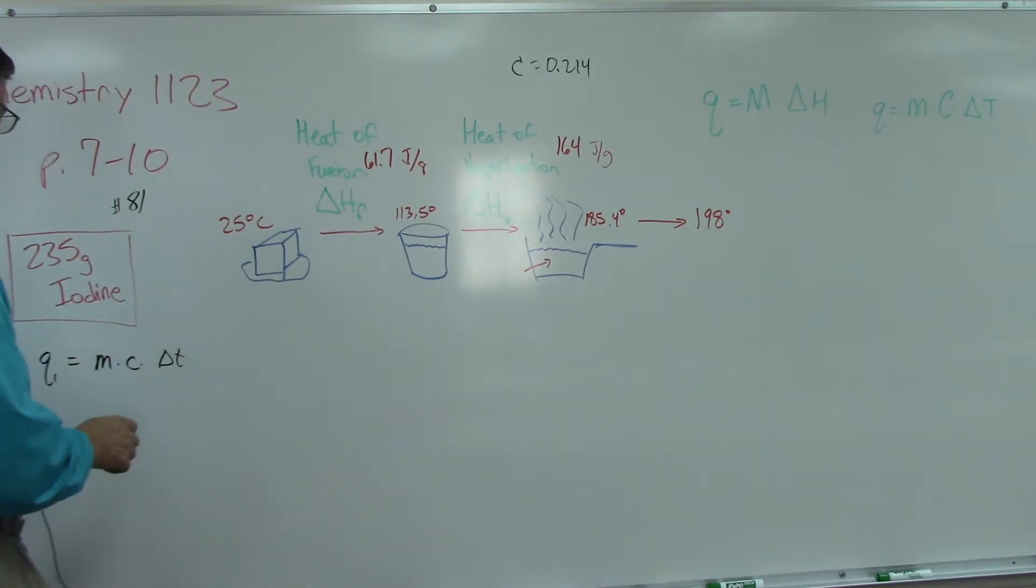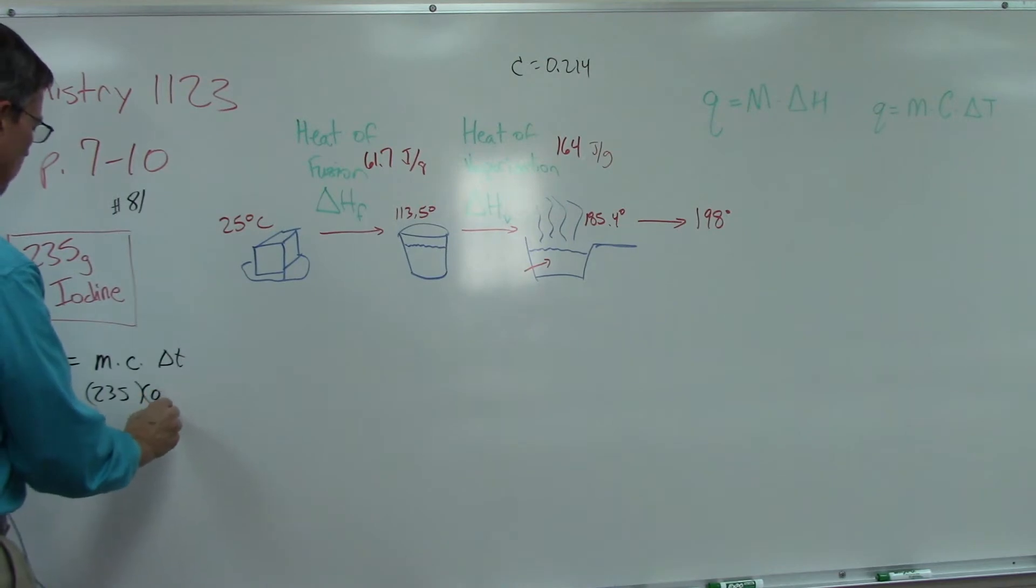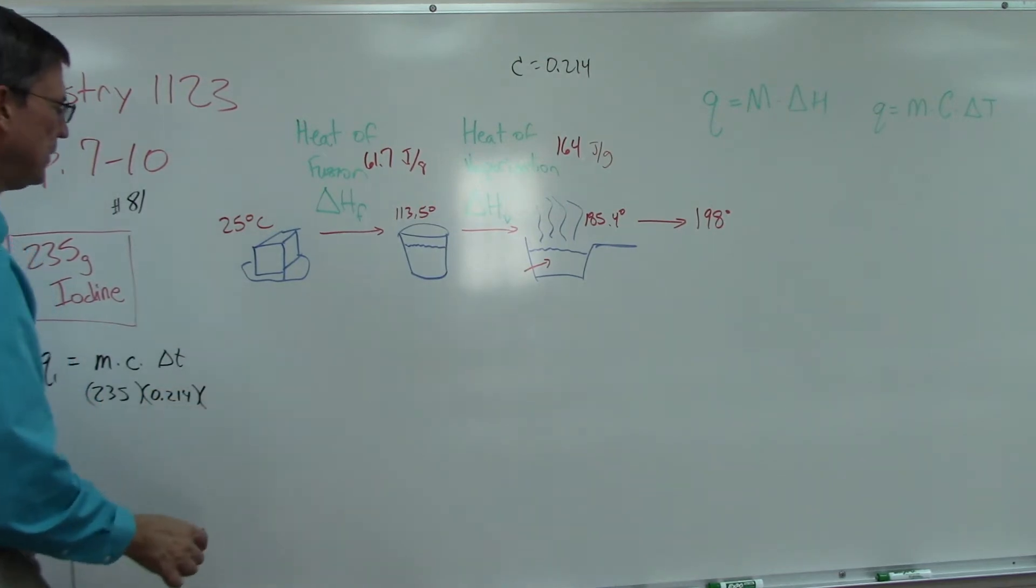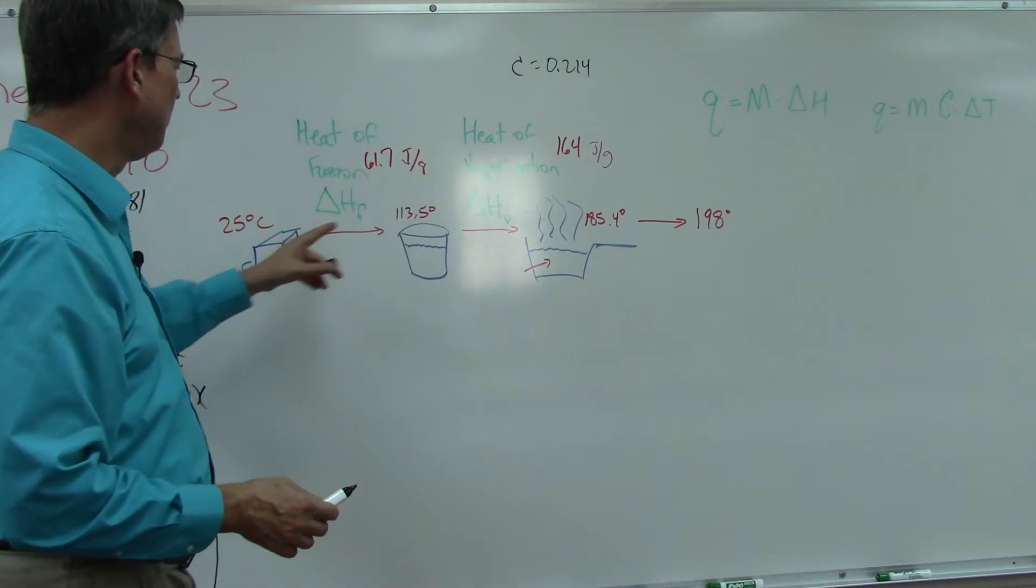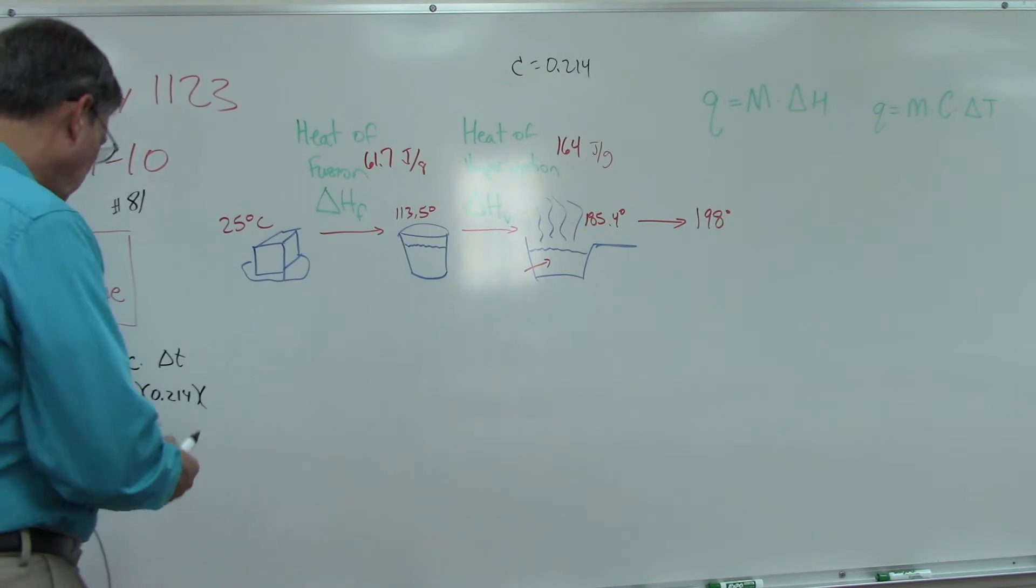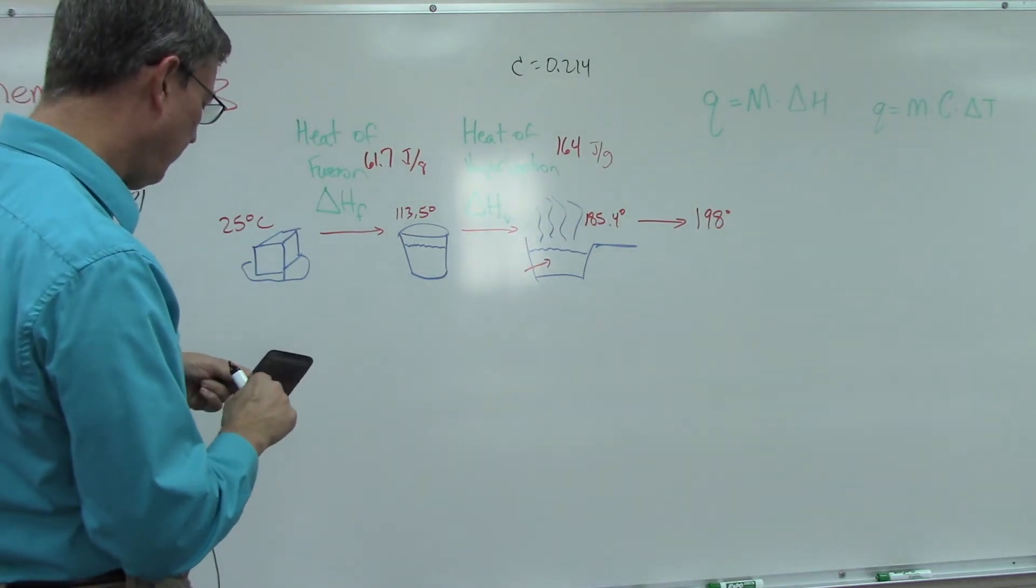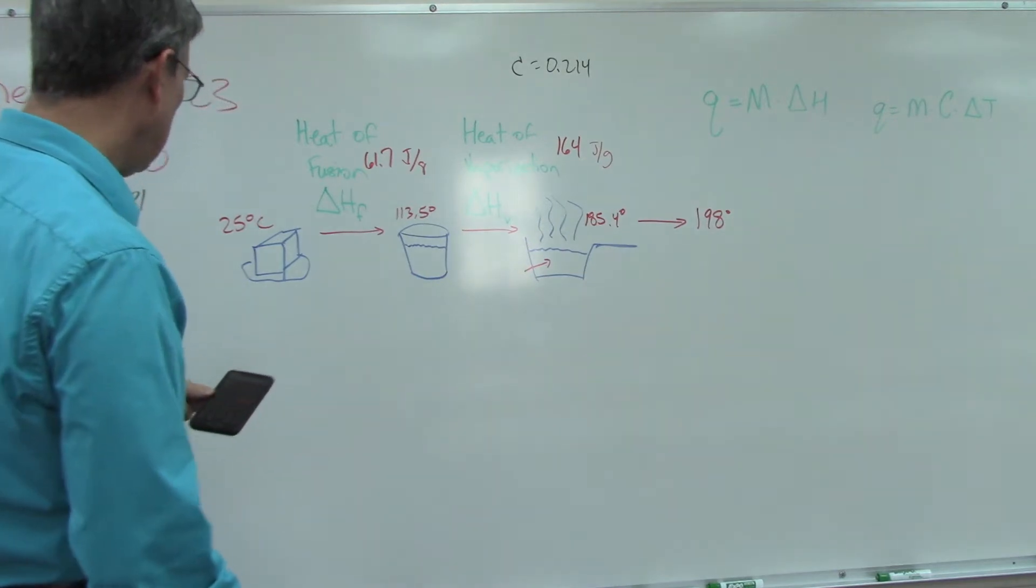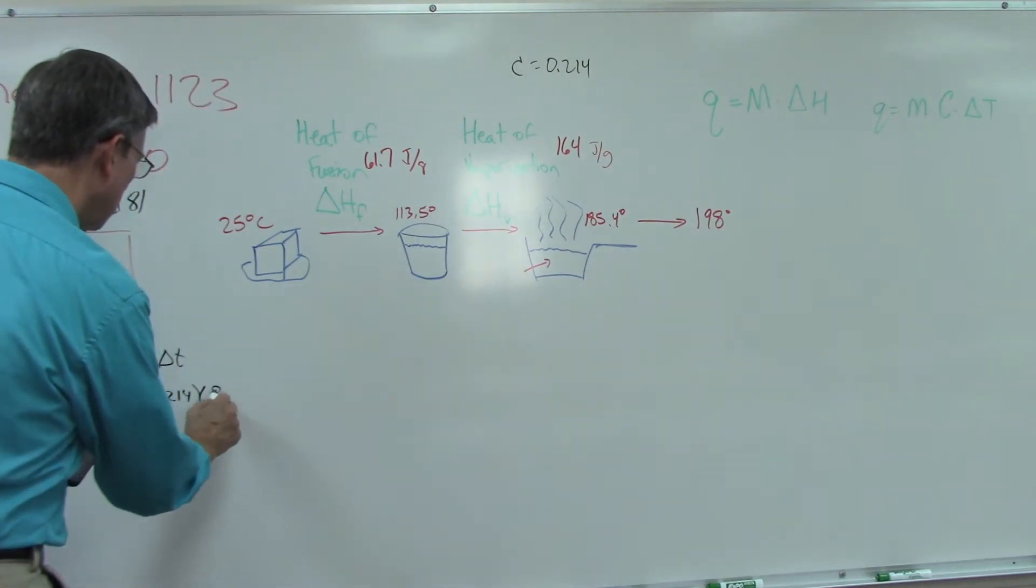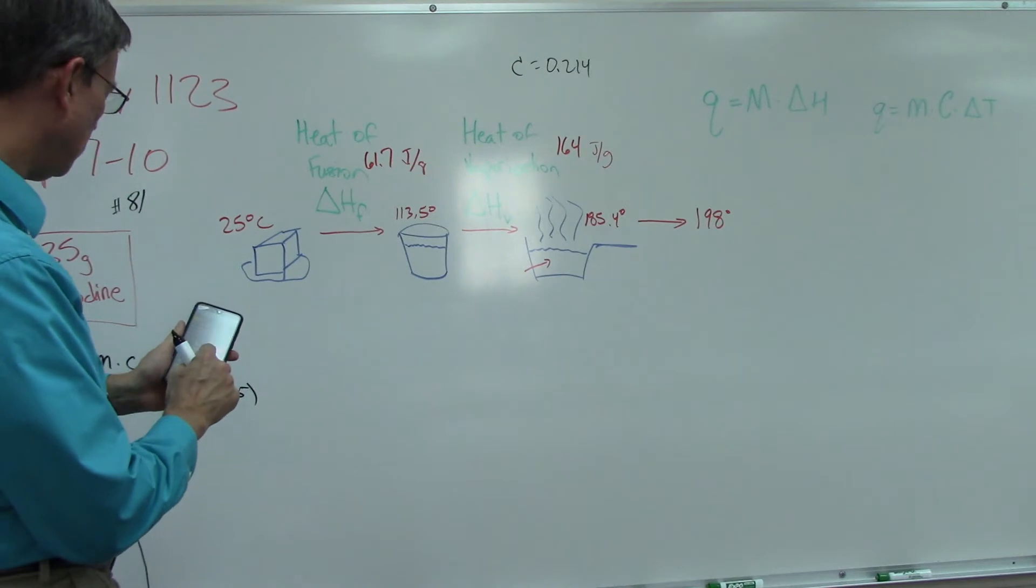We need to use M times C times delta T. The M we know is 235. The C value we just found is 0.214. Now let's figure out the change in temperature. We're going from 25 to 113.5, so 113.5 minus 25 equals 88.5.